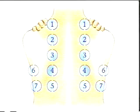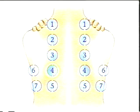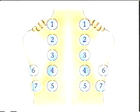To auscultate the posterior thorax, begin at the apices and proceed downward, moving systematically from side to side and comparing the sounds in symmetrical areas.